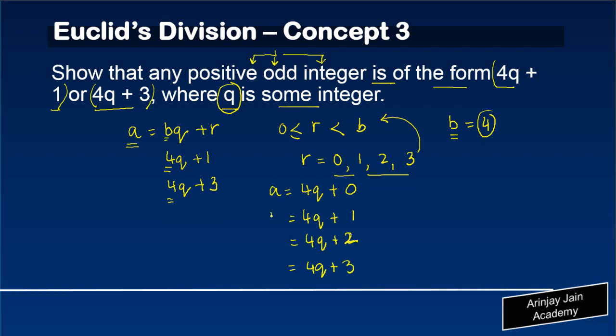But if I simplify, I can write this as 2 into 2q, this remains as it is, this can be further simplified as 2 times 2q plus 1, and this is 4q plus 3.